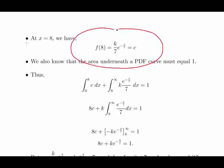We also know that the total area under the curve must equal 1. We have two components here and we're going to integrate them both. The limits of integration for the uniform component is 0 and 8, and for the exponential component it is 8 and infinity.